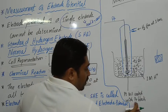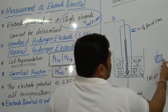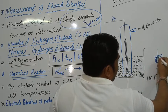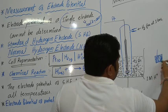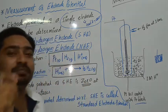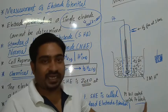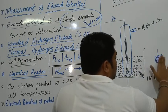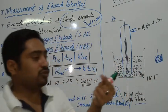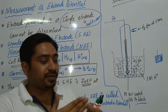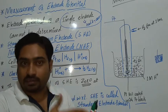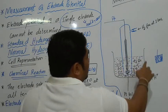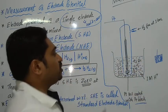The platinum foil is coated with platinum black on its surface. Platinum black means finely divided platinum powder, which is also called platinum black. This platinum powder paste — which is nothing but platinum black — is pasted over the surface of the platinum foil.